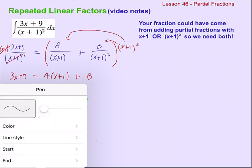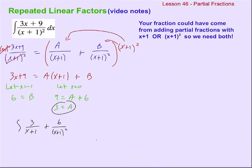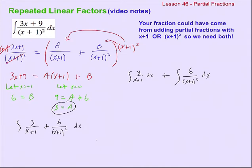So our original integral can be rewritten as the integral of three over x plus one plus six over x plus one squared, with respect to x. Make sure we're careful that it's A over the x plus one by itself, and B over x plus one squared. We can work with these integrals. We're allowed to break up sums — the integral of a sum is equal to the sum of the integrals.